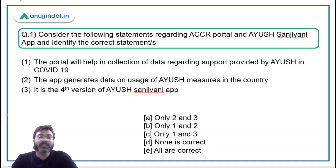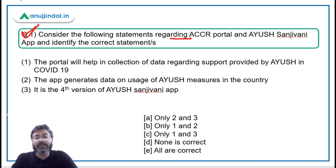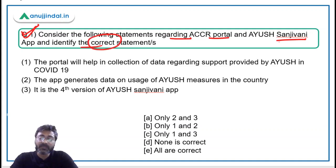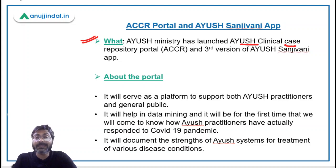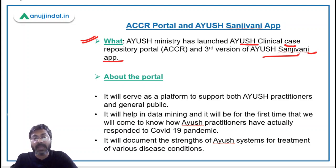Let's begin with the first question, which is about the ACCR portal and Ayush Sanjivani app. You have to consider the following statements regarding this portal and app and identify the correct ones. The Ayush Ministry has launched the Ayush Clinical Case Repository portal — the ACCR portal — and the third version of the Ayush Sanjivani app. Remember, this is not a newly launched app; it is the third version.